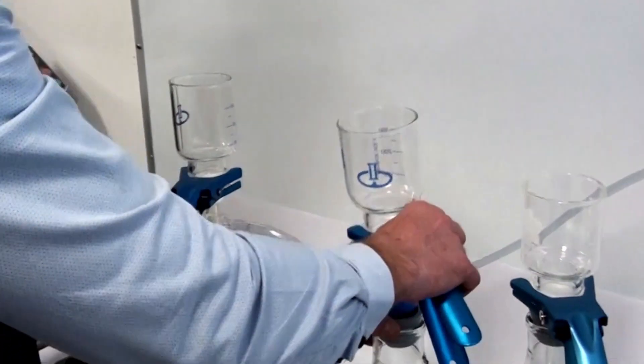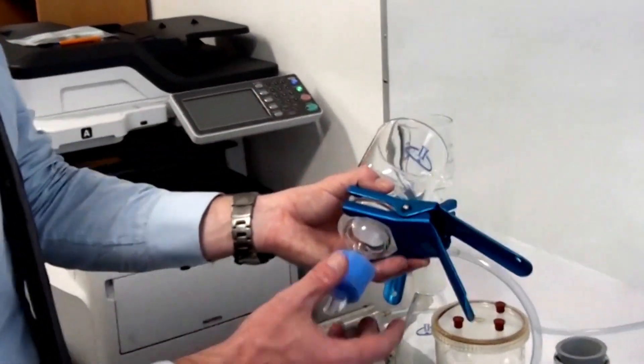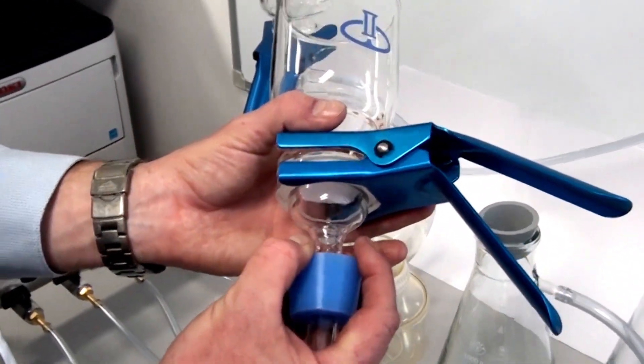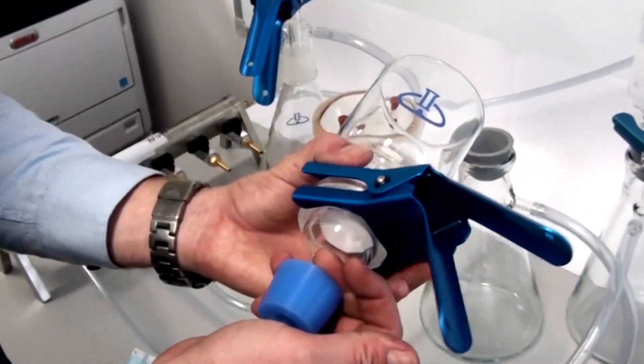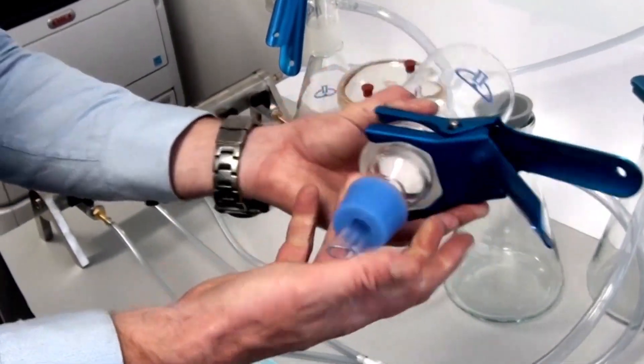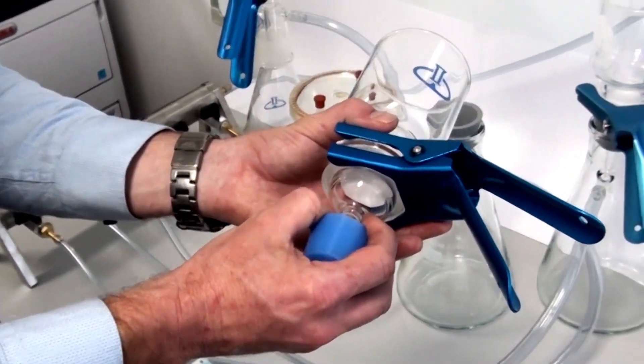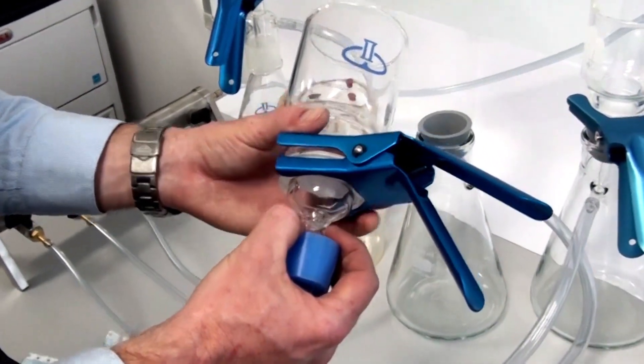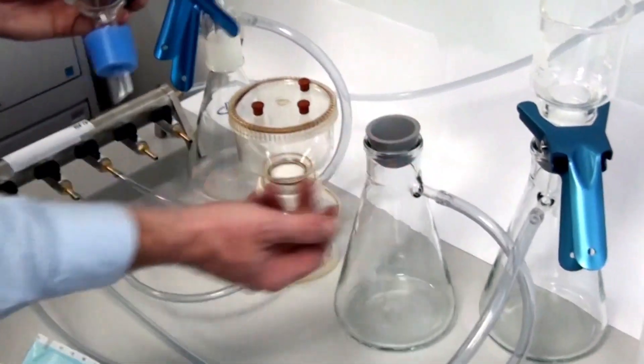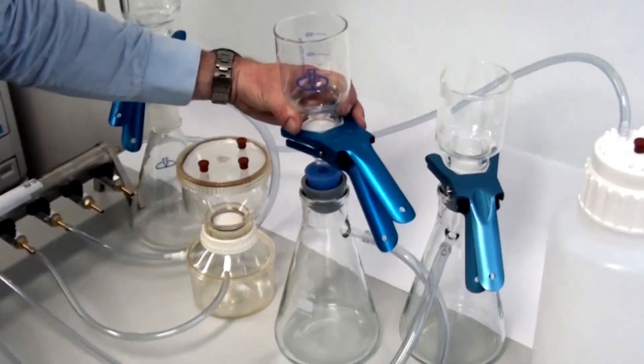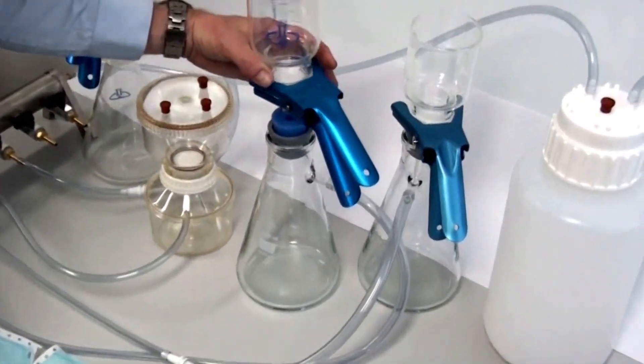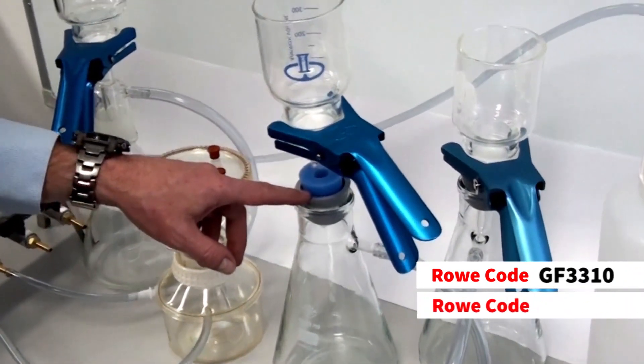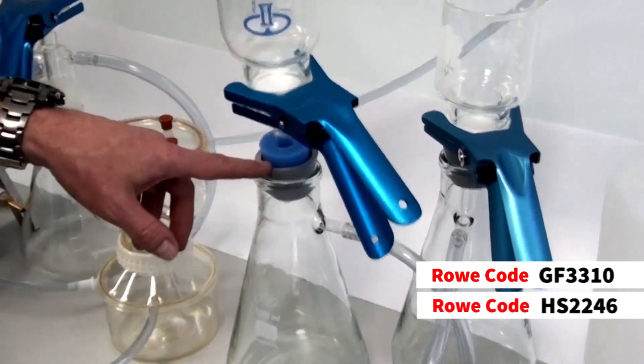Now, this isn't ideal. This stopper number eight, a size eight stopper, I've tried getting that off. Phil, do you know if these come off? It'll fit into a 500ml filter flask, but not a 1L. Right, okay. So most people set up with a Gooch? Yeah, it's like a 1L you use a Gooch. Yeah, okay. So the flask is GF3310, and the Gooch rubber I've got on there is an HS2246.